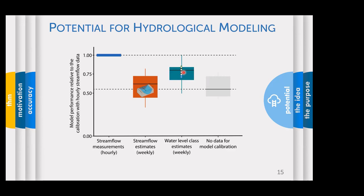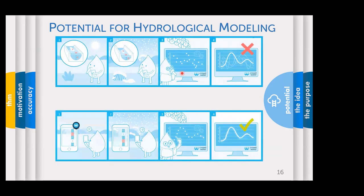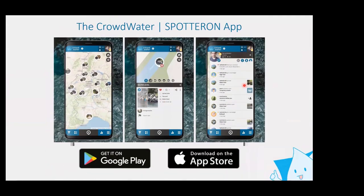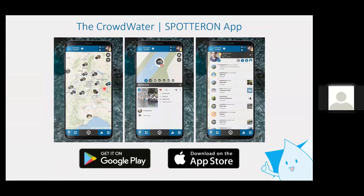Here is a short summary in comic form: people estimated streamflow directly, which was not useful for model calibration; but they also estimated based on the virtual staff gauge with classes, and that data can actually be used for hydrological model calibration. Now a short commercial break — I'll introduce the CrowdWater app. This app was developed during the time we were conducting surveys, and with it you can collect water level class data based on the virtual staff gauge approach. It also has a bit of a social network aspect — you can like, share, and follow as a user.